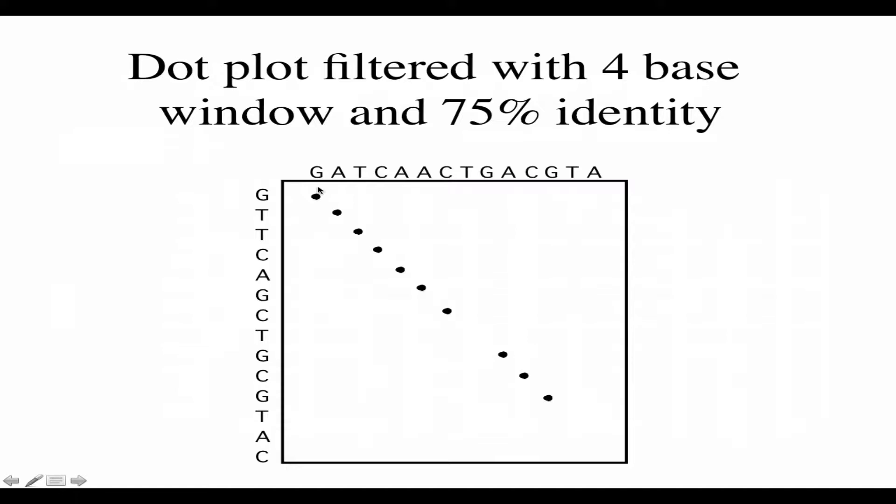I'm taking a window of four bases and saying if these four are 75% the same, I'm going to put a dot under the G. So that dot represents the whole window. That's just a convention — you put the dot at the first letter of the sliding window rather than in the center.